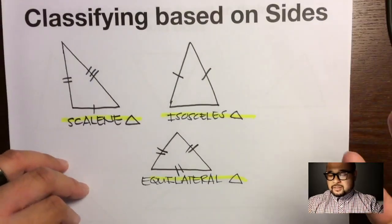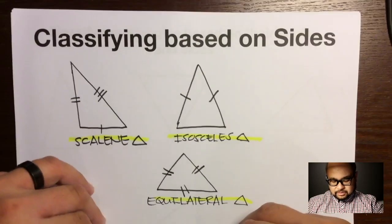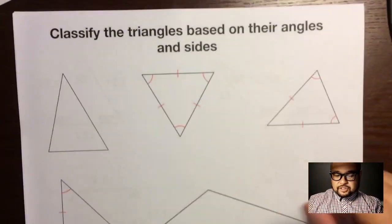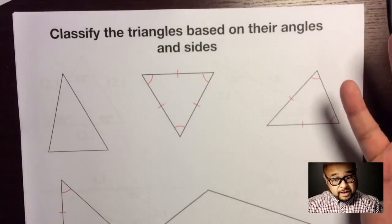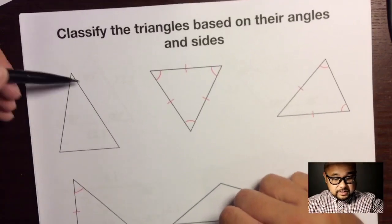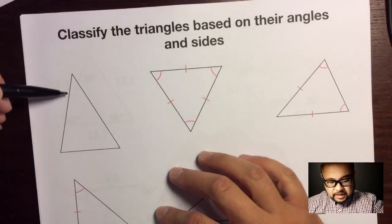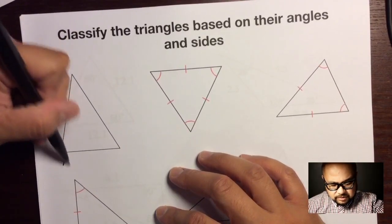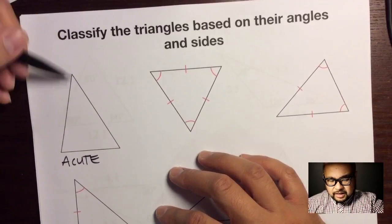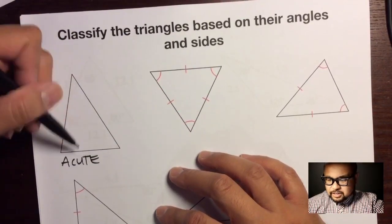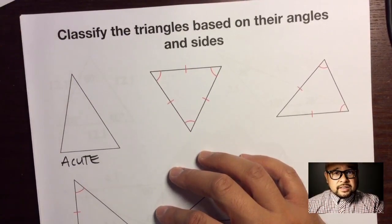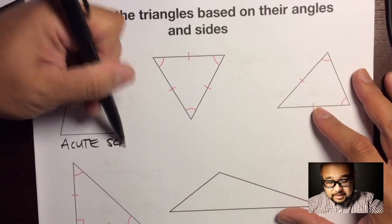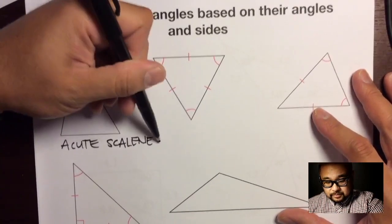Let's put this into practice. Classify these triangles based on their angles and their sides. For the first one, all of the angles appear to be acute, and there are no tick marks — so we can't assume any sides are congruent. This would be an acute scalene triangle.